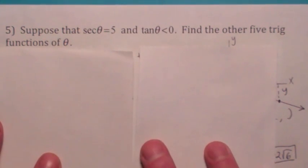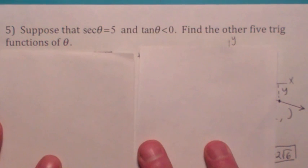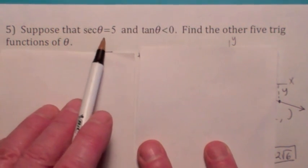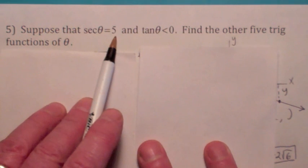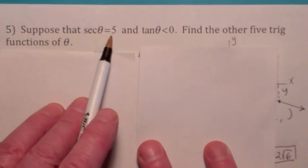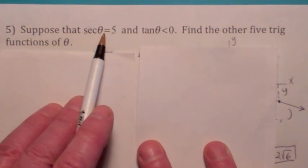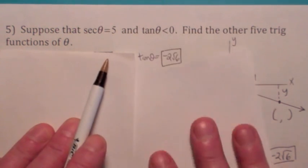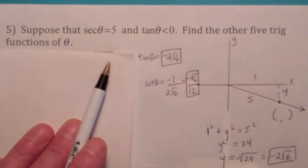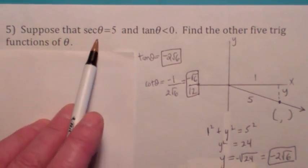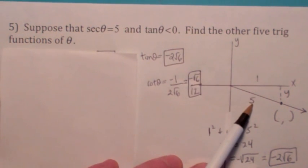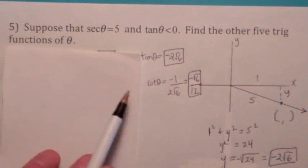Suppose secant of theta is 5 and tangent of theta is less than 0 — find the other five trig functions. If secant is 5, the cosine is its reciprocal, so cosine equals 1/5. That would put us in quadrant 1 or 4. But if the tangent is negative, we must be in quadrant 4. Think of cosine = 1/5 as x over r, so x = 1 and r = 5. Always draw a picture and use the Pythagorean theorem to find y.